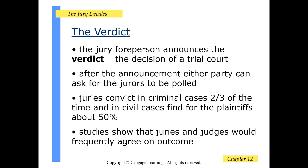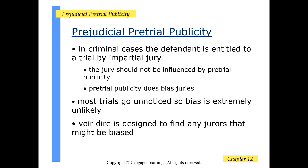The jury foreperson announces the verdict, and either party can ask for the jury to be polled. Juries convict in criminal cases about two-thirds of the time, and in civil cases find for the plaintiff about 50 percent of the time, making civil cases essentially a 50-50 shot. Studies show that juries and judges would frequently agree on the outcome of a case. Most trials go unnoticed, so bias from pre-trial publicity is extremely unlikely.